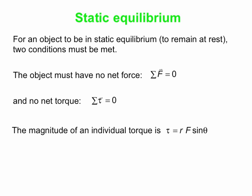For an object to be in static equilibrium — in other words, to remain at rest — two conditions must be satisfied. The first is the object must have no net force: the sum of all the forces equals zero. The second condition is the object must also experience no net torque: the sum of all the torques equals zero. An individual torque's magnitude is found using τ = rF sinθ.